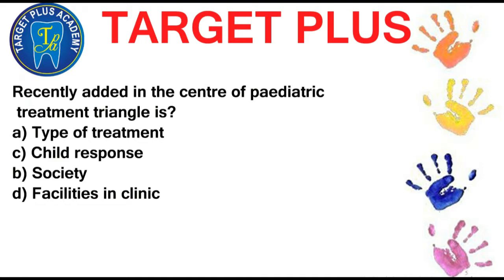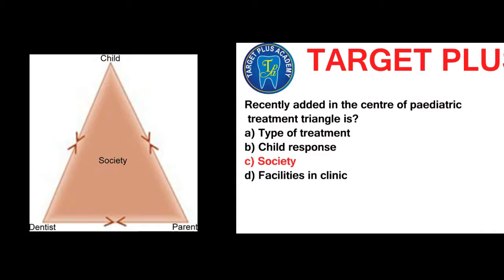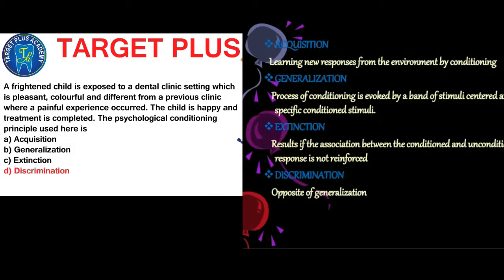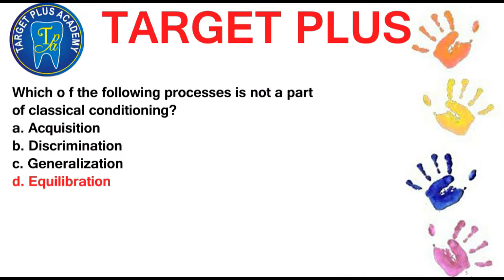Recently added in the center of the pediatric treatment triangle is society. A frightened child is exposed to a dental clinic setting which is pleasant, colorful, and different from the previous clinic where a painful experience occurred. The child is happy and treatment is completed. The psychological conditioning principle used here is discrimination. Discrimination is the opposite of generalization. Which of the following is not a part of classical conditioning? The answer is equilibration — equilibration is a part of cognitive theory by Jean Piaget.